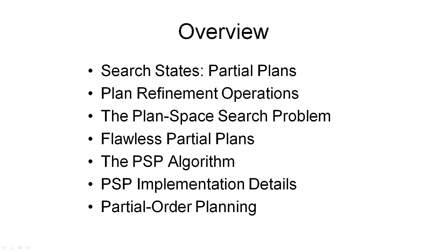A partial plan is a solution for a given planning problem if it contains no more flaws. So our goal test will be to check whether our partial plan is a flawless partial plan. Of course, we haven't defined a flaw yet, so that's what we will do next. And when we have done this, the search problem will be complete. We have defined the initial state, we have defined the successor function, and we will now look at the goal test.